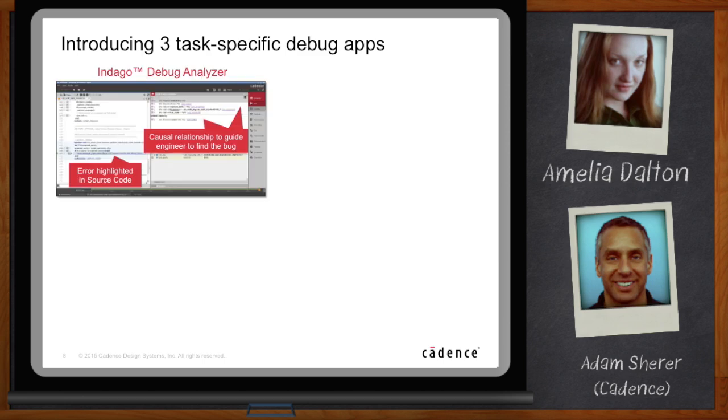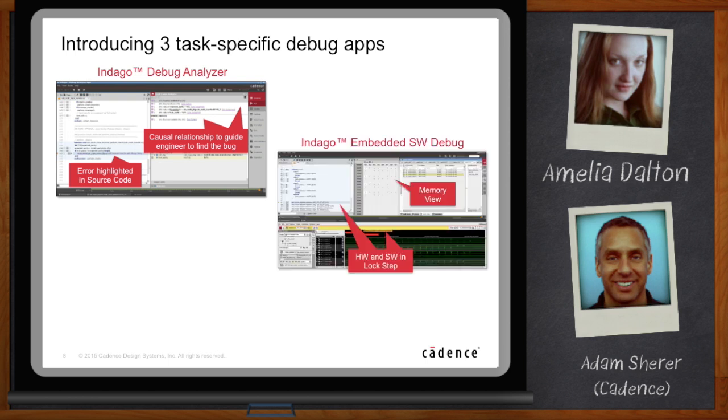There's an Indago debug analyzer, which is great for RTL and TestBench. You can see errors highlighted in the code. You can see the causal relationships. That's how we connect the variables and the values and the issues in the design. There's embedded software. This is a big area for our customers today where they have embedded cores in their design and they want to synchronize C, C++ that's running in their system with the hardware, with the TestBench. So, how do you track all this together? Yeah. So, that's what this app does. It'll read like an ARM Tarmac file and keep it all synchronized with the original source code that you're running on the embedded as well as your hardware.